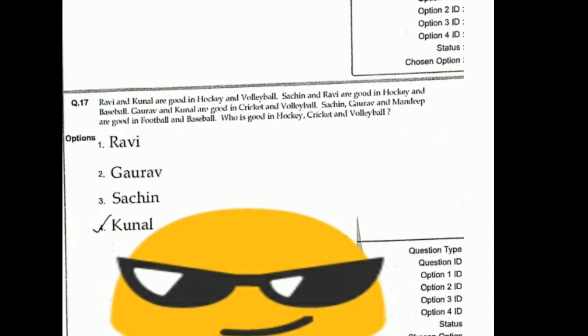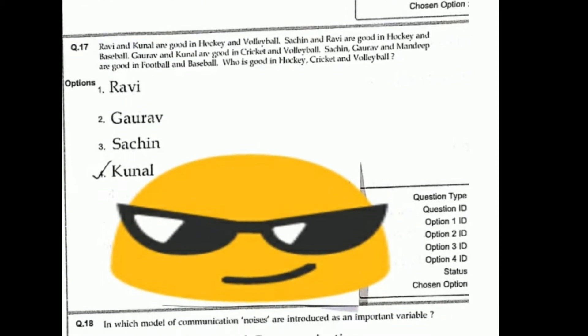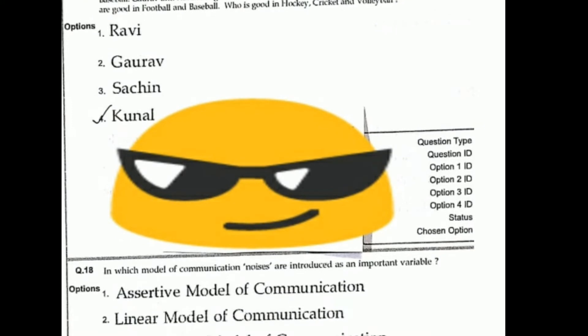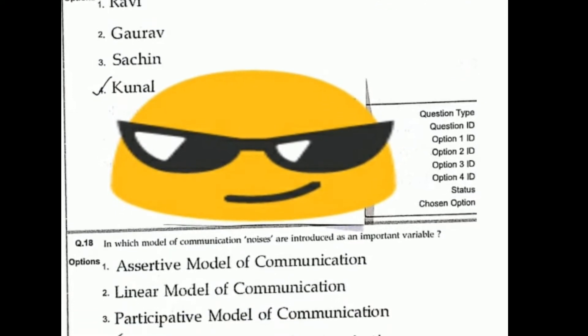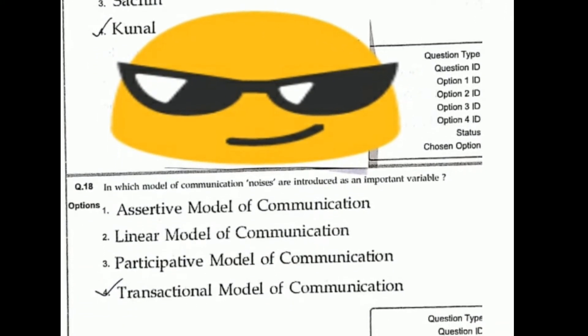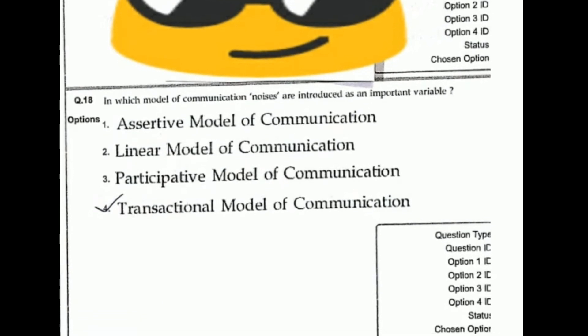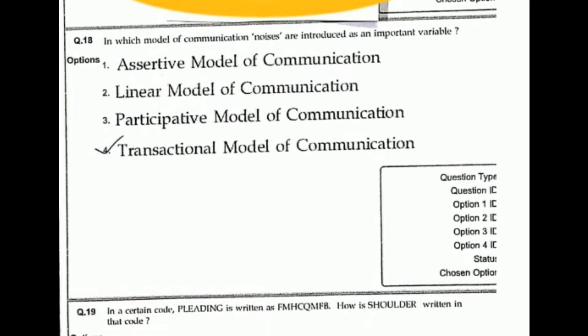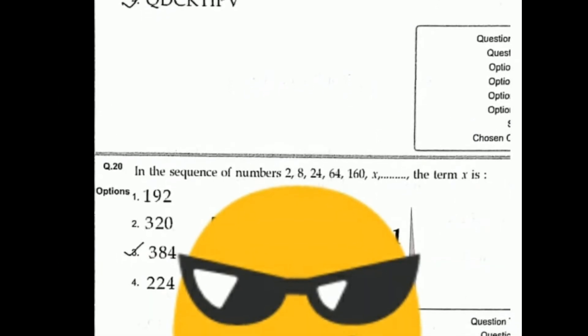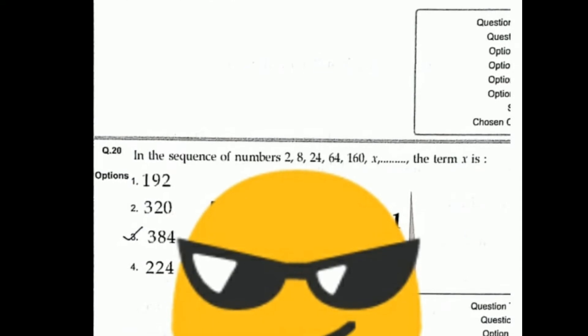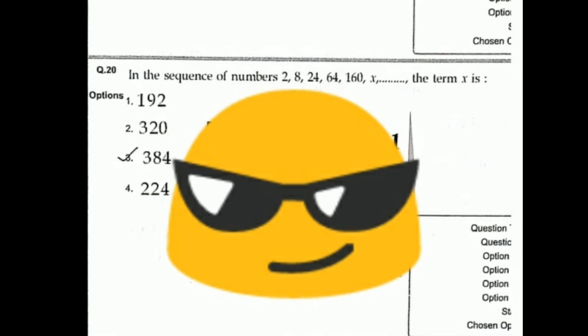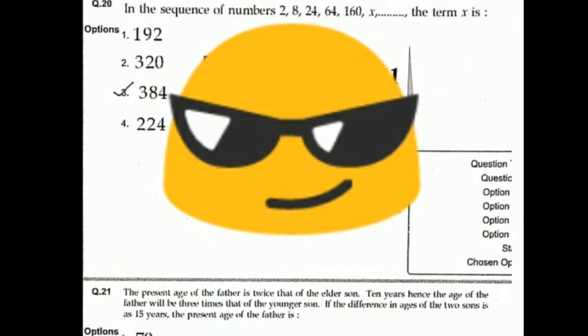For question 16: encode symbol message, option four. Question 17's answer is canal. Question 18's right answer is transaction model of communication. Question 19's right answer is A, Q, D, C, K, T, I, P, V. Question 20's right answer is 384 — the sequence right answer is 384.